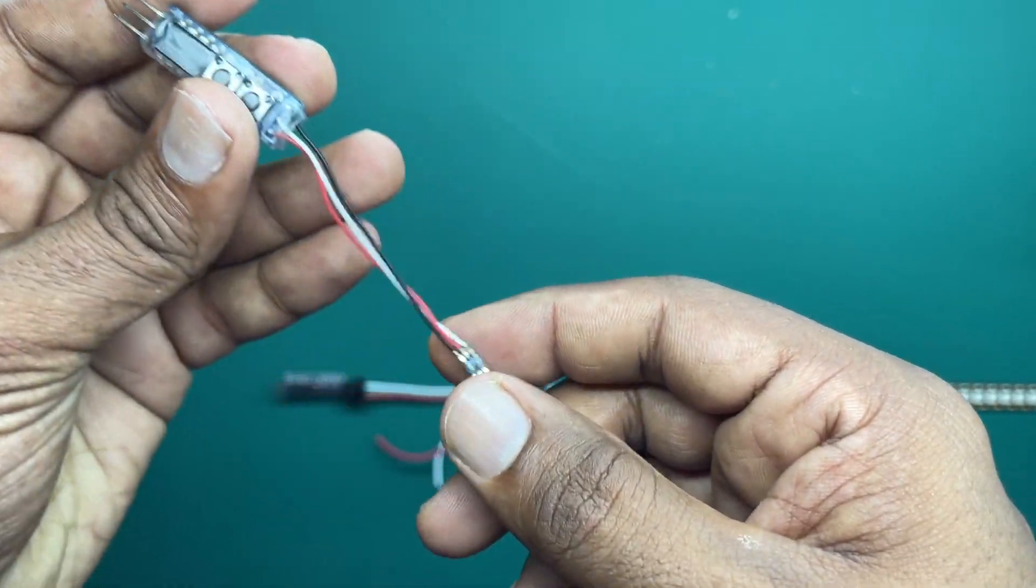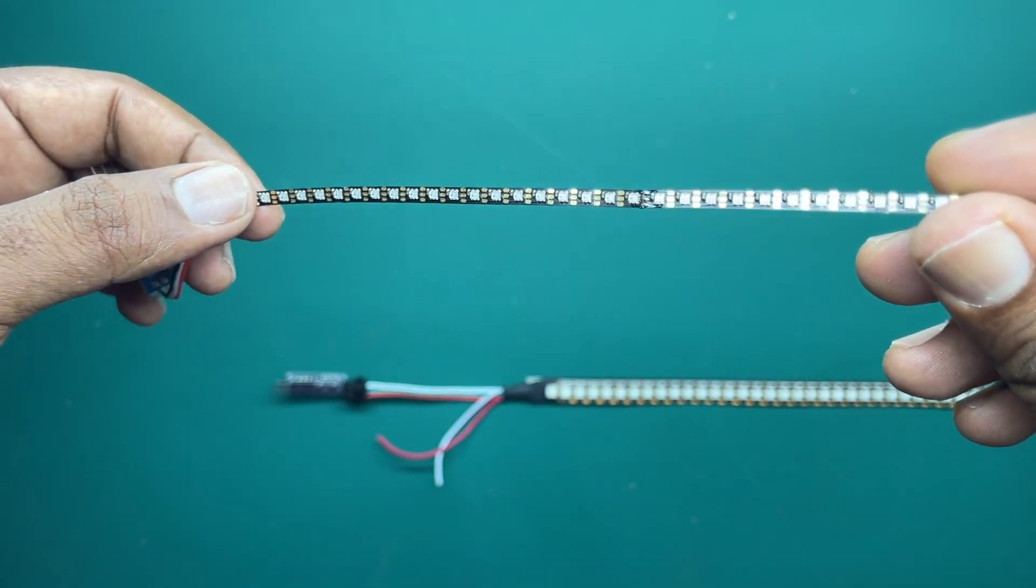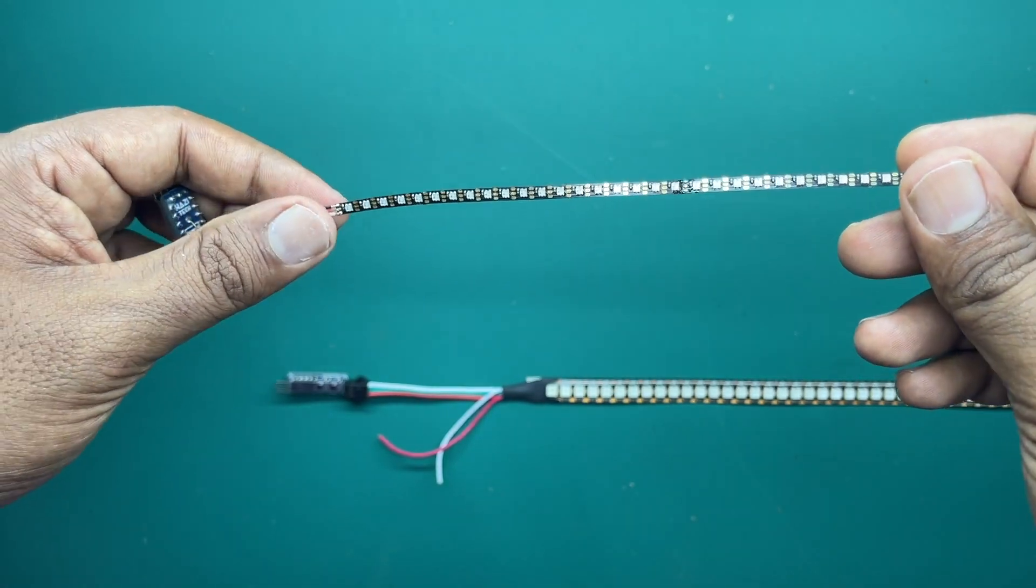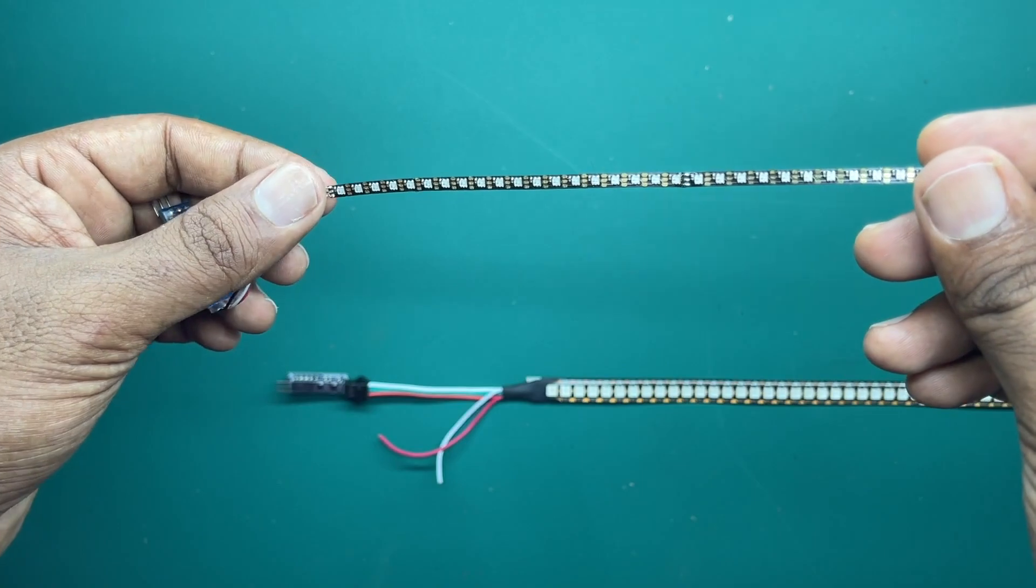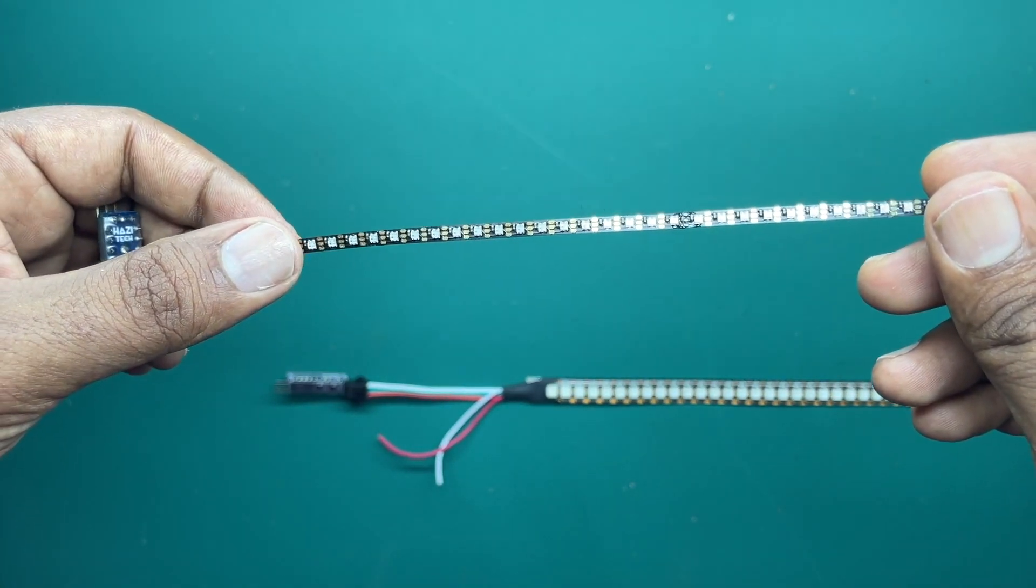And here, I have actually directly soldered a smaller narrow width WS-2812B LED strip. So this strip is very suitable for RC application because it is very compact and it can be used in the front grill of the RC car or like in light bar.